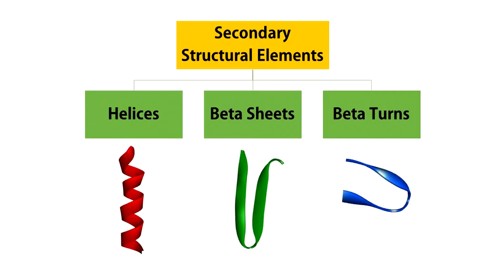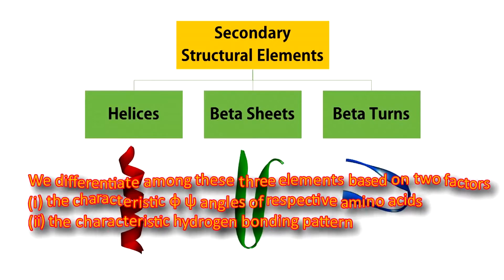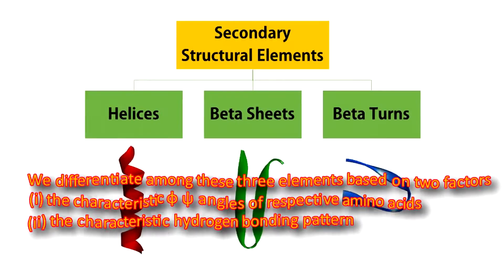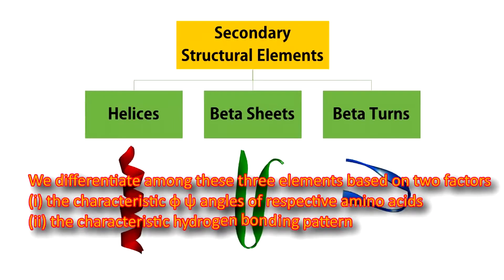Three general types of secondary structure elements have been identified: helices, beta sheets, and beta turns. We differentiate among these three elements based on two factors. One, the characteristic phi-psi dihedral angles of the respective amino acids and two, the characteristic hydrogen bonding pattern.